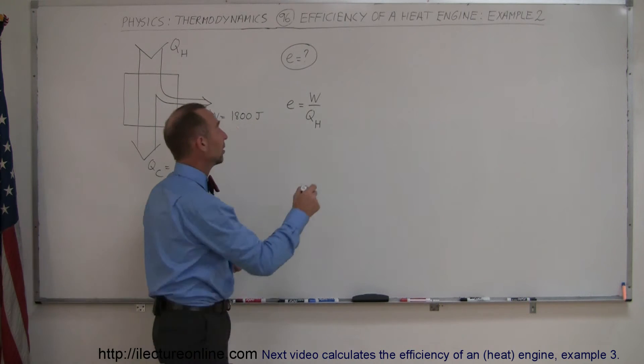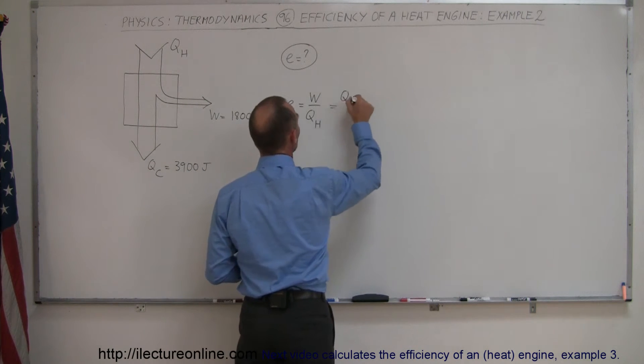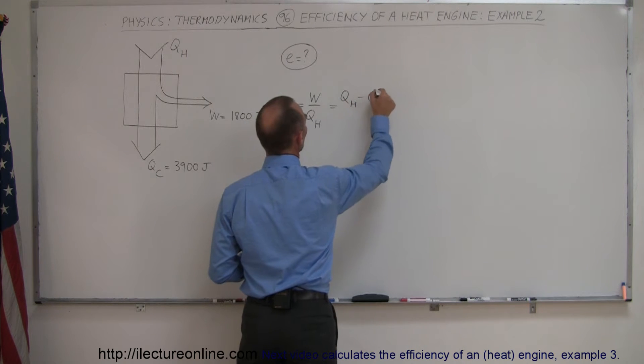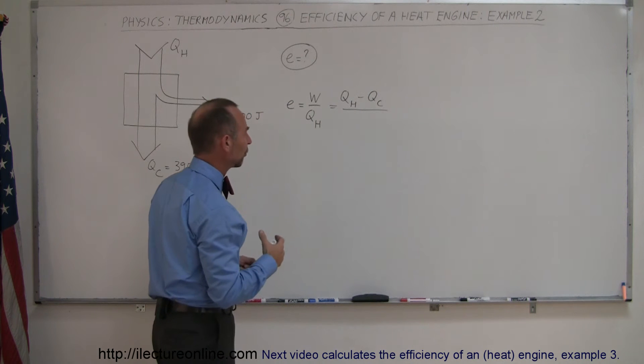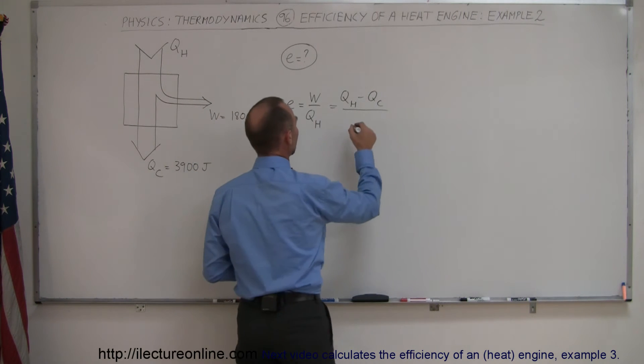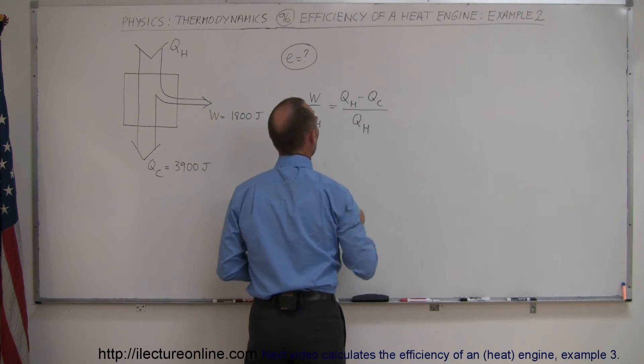Another way of writing this is the efficiency equals the difference between the heat from the hot reservoir minus the heat expelled to the cold reservoir, divided by the heat taken from the hot reservoir.